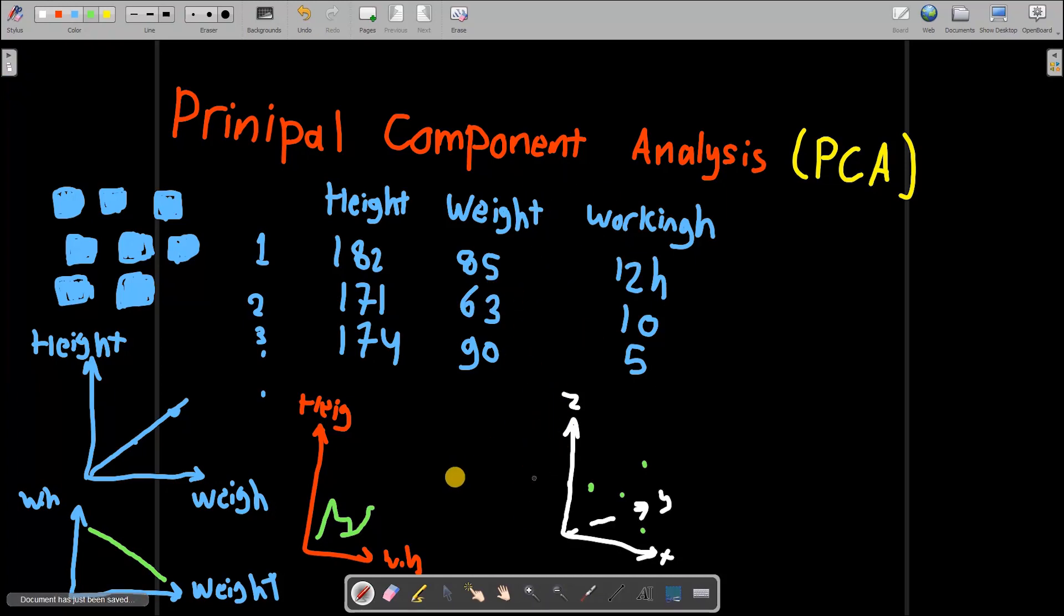Let's say x is height, y is working hours, and then we have the weight on the z axis. Definitely we can do that, but is this really practical? Imagine if I have around 10 features.